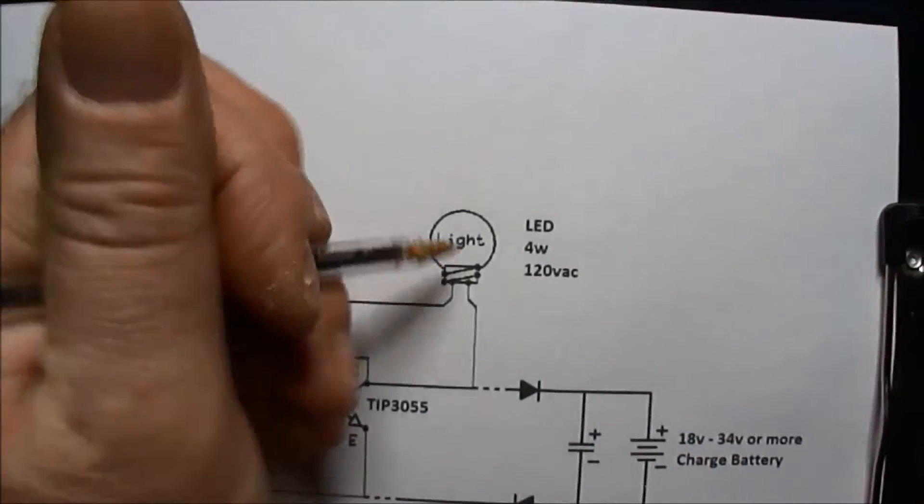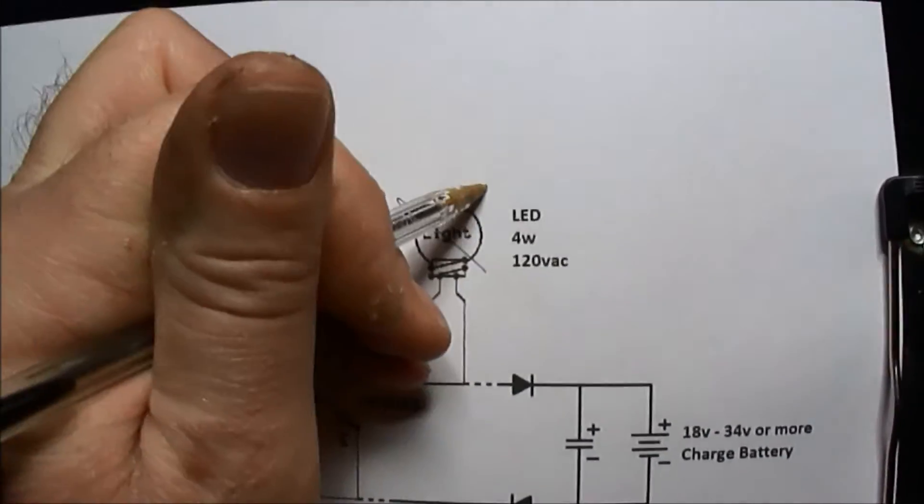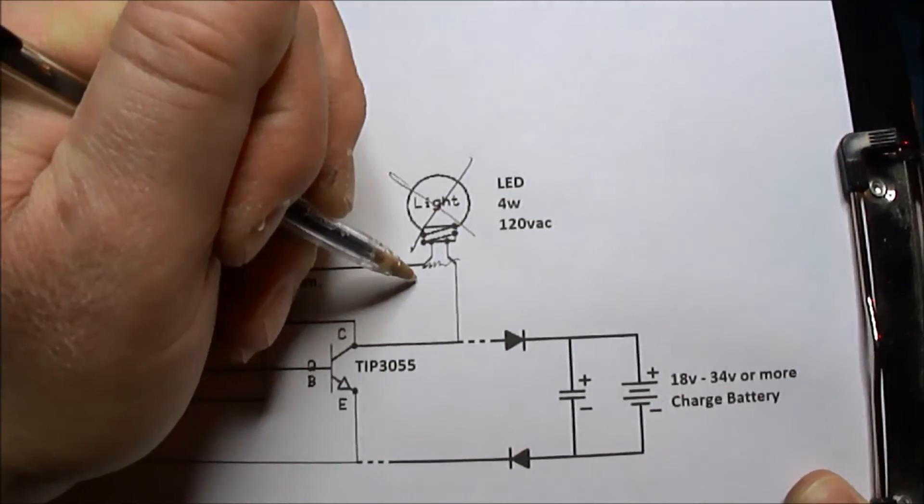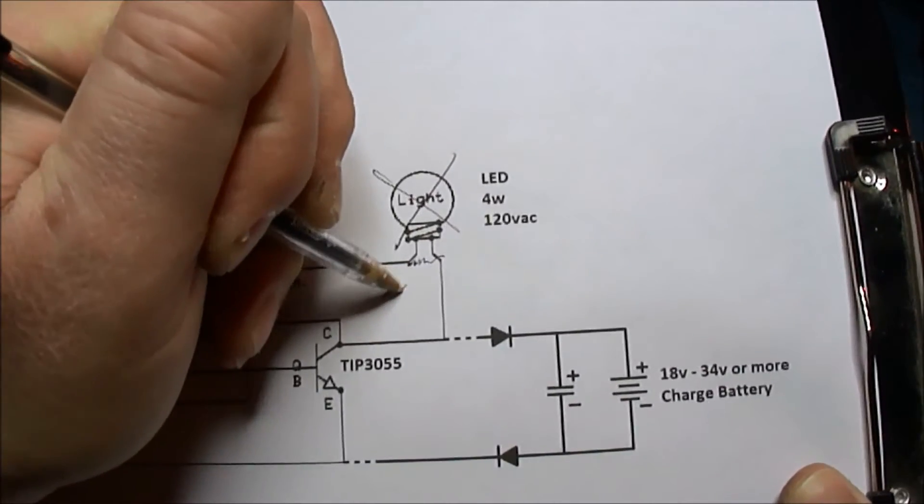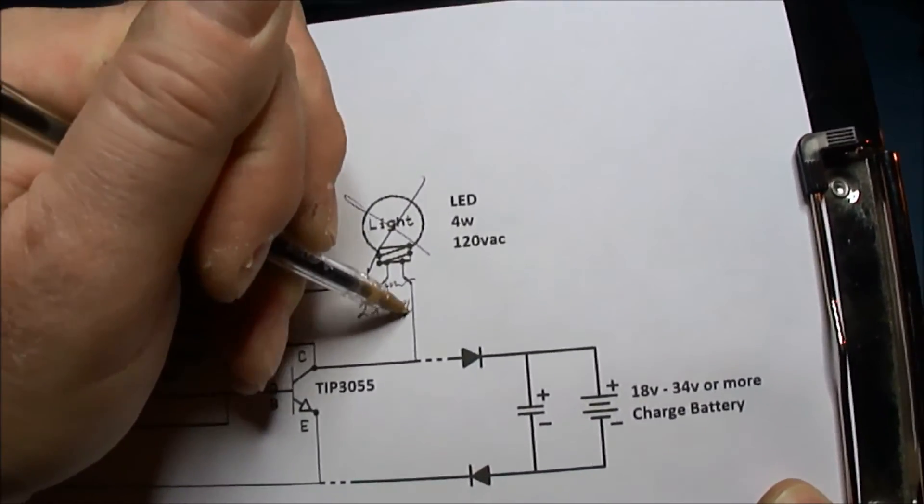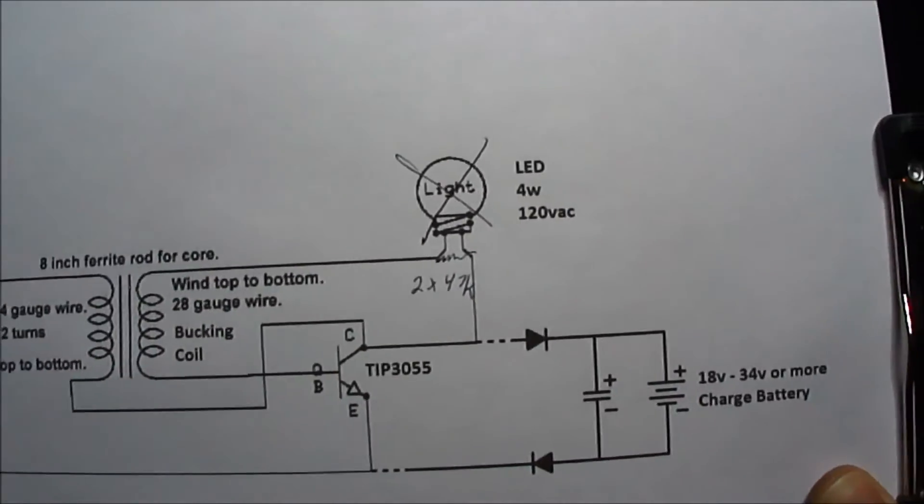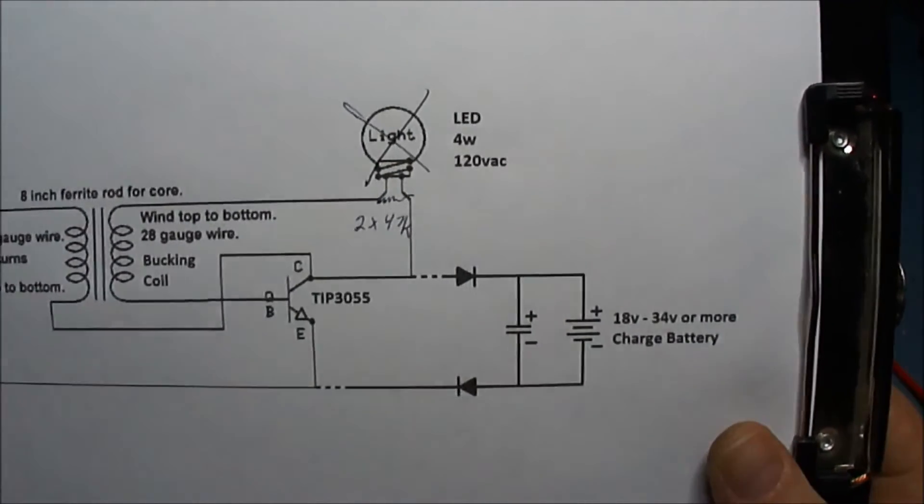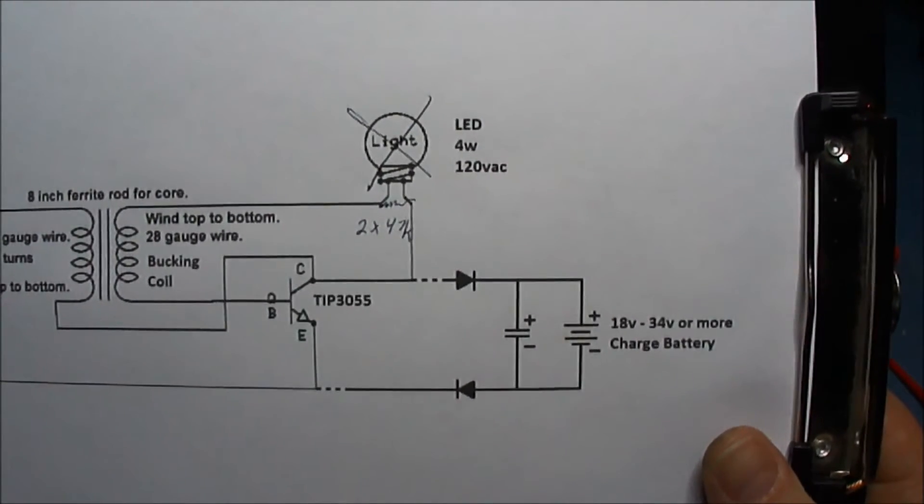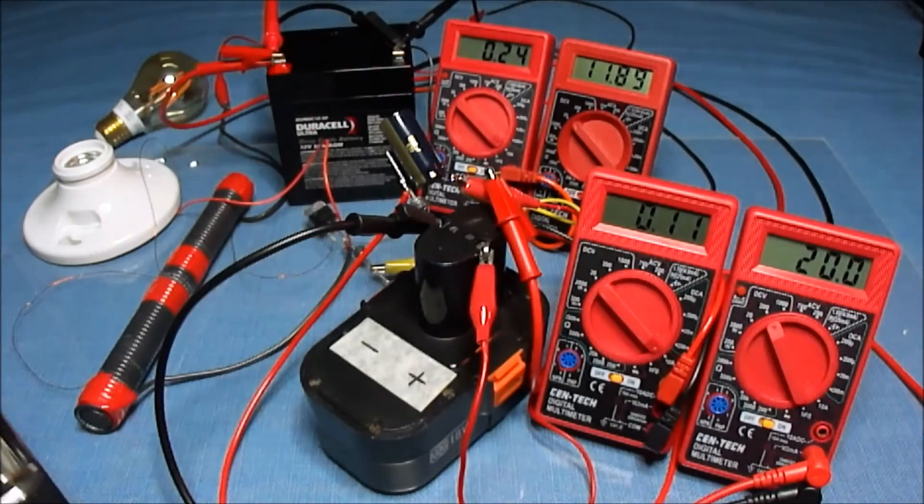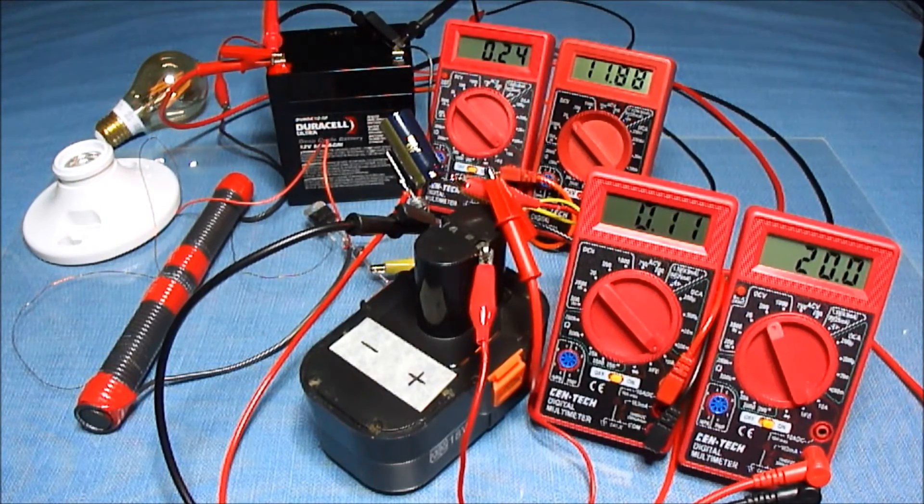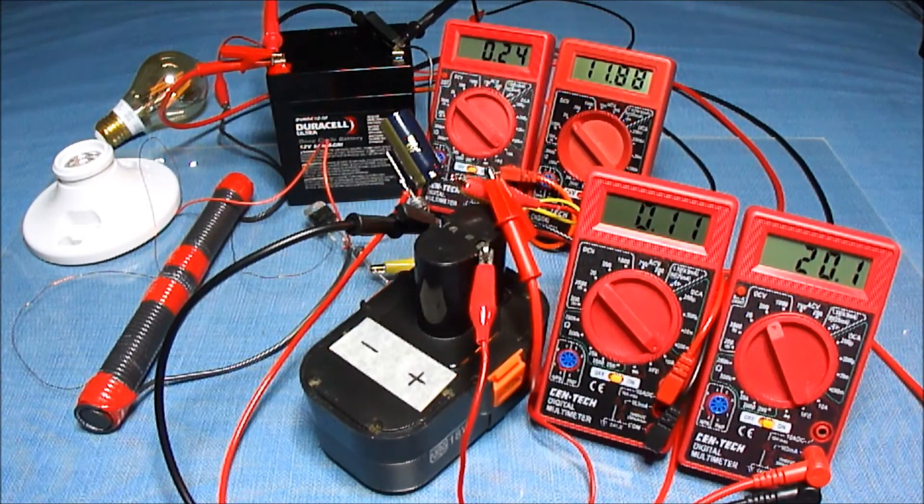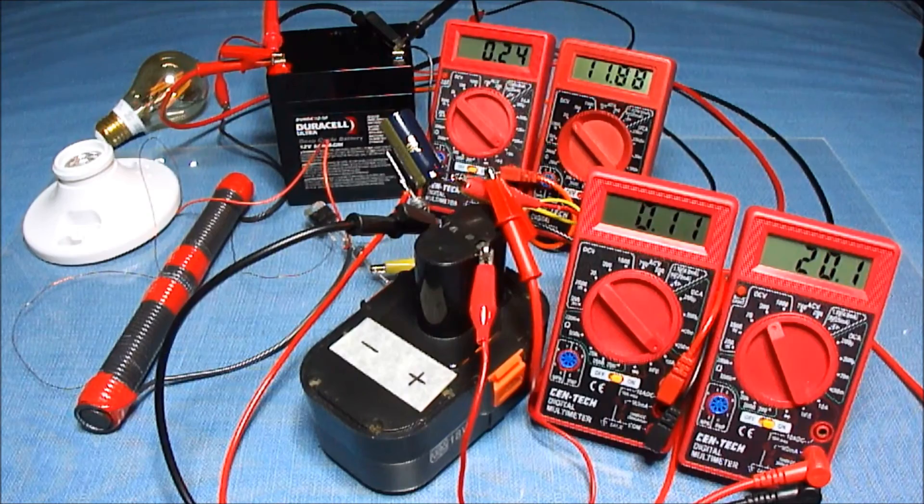So to improve our efficiency, I'm going to get rid of this bulb and we're going to go with the resistor there. I got two 47K resistors there. Now we're going to look at and see what else we can do to improve this. Because right now, all we are is in charge mode. We're not running any kind of light. But we're still moving energy uphill.